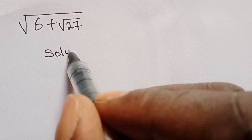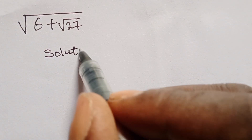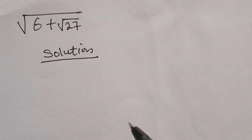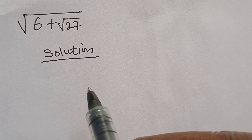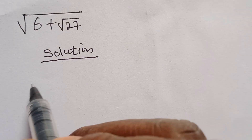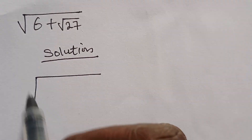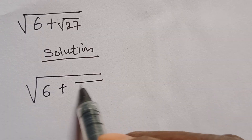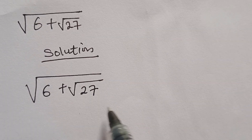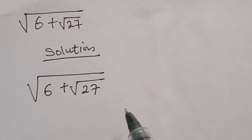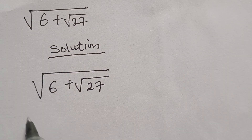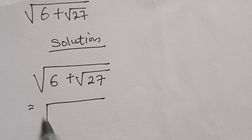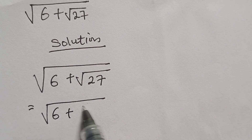Today we have square root of 6 plus square root of 27. We are asked to solve this challenge. To solve this kind of square root is easy and straightforward. So follow me to the end of this video so that you will also know how to solve this kind of square root. I have square root of 6 plus square root of 27.